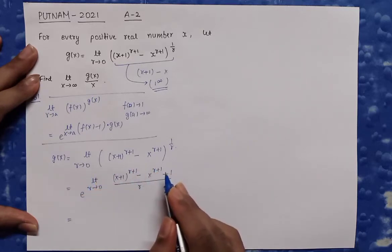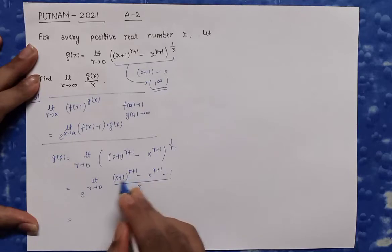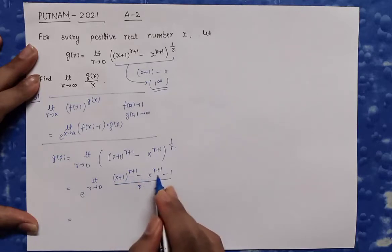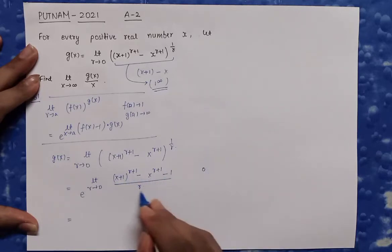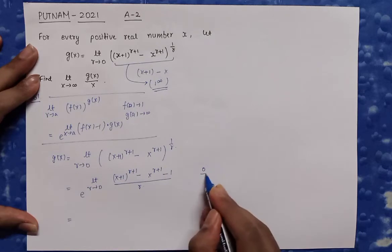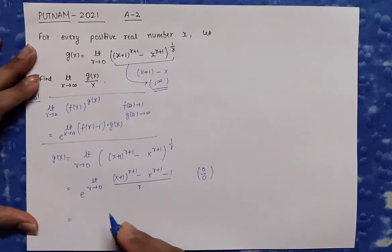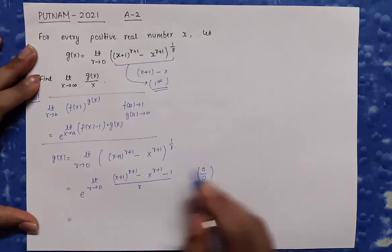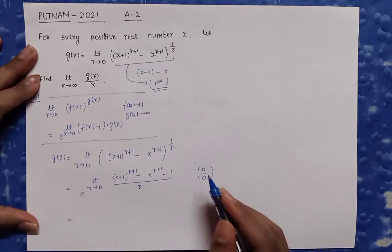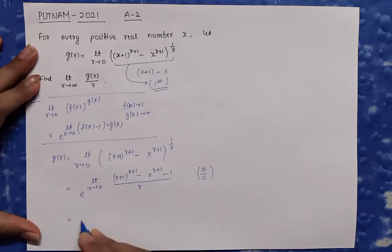Let's check what type of limit is now in the exponent. If I substitute r = 0, the numerator gives (x+1) - x - 1 = 0, and the denominator is also 0. Therefore it is a 0/0 limit. In a 0/0 or ∞/∞ form we can directly use L'Hôpital's rule, so we are going to use that.